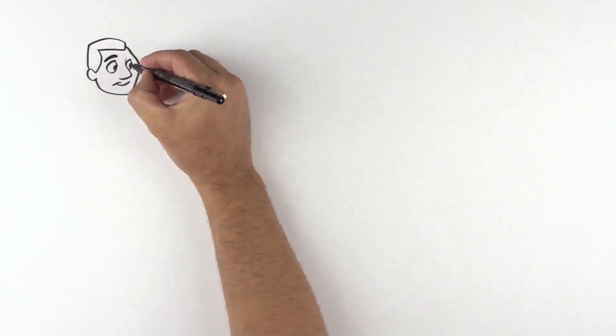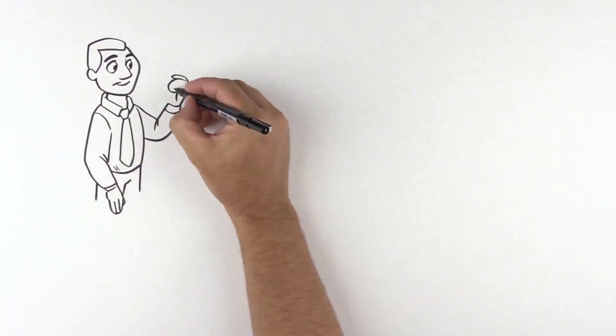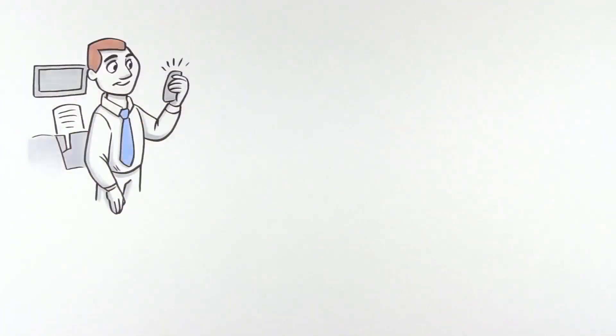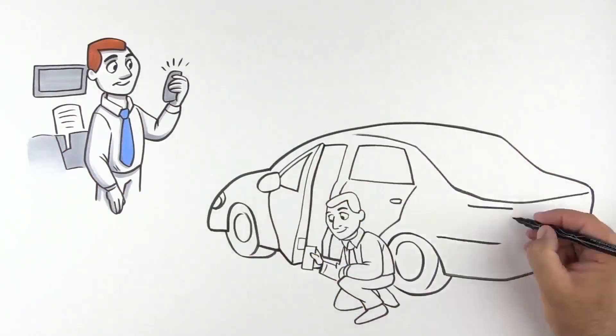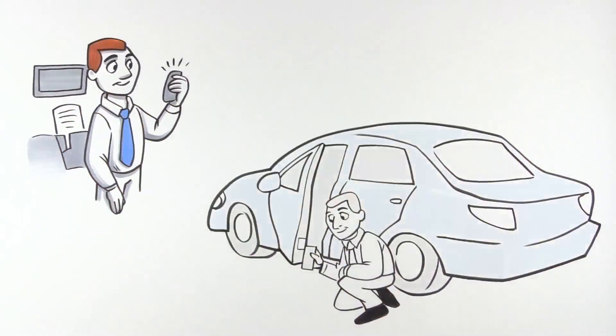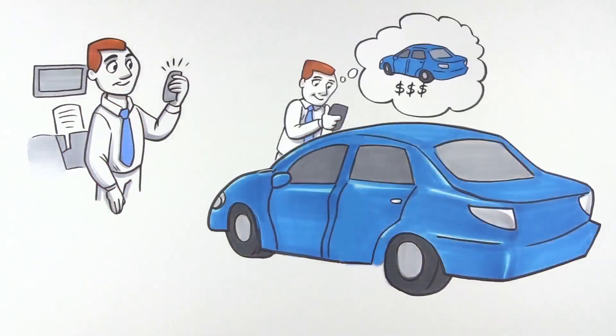Your pre-owned manager is automatically alerted that a trade appraisal request is now on the lot. They can now analyze auction pricing, book and wholesale values, and vehicle history reports all from one screen. Your pre-owned manager can easily find out how many inquiries you've received for similar vehicles on your website and in local search engine activity.